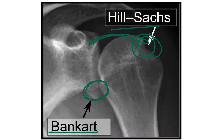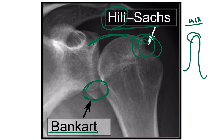We have to remember carefully that Hill-Sachs and Bankart are different. Remember: 'heel' means the upper part — heel equals height. So in the upper part there is the Hill-Sachs lesion, and in the lower part it is the Bankart lesion. By this mnemonic of 'hill,' we can remember that Hill-Sachs lies in the upper part of the humeral head.